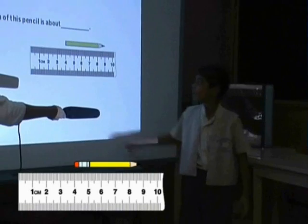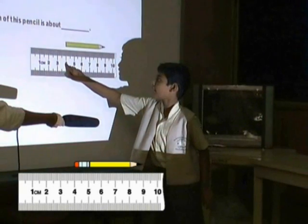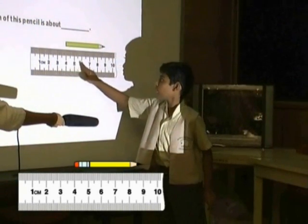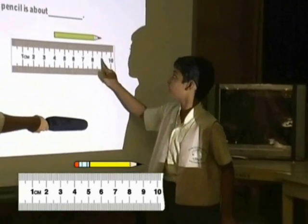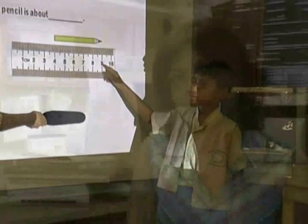M is here and the answer is six because it's starting from here. One, two, three, four, five, six. And the ending point is here.